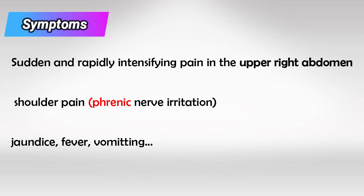If a gallstone obstructs the flow of bile from the gallbladder, it will result in right upper quadrant abdominal pain, which is progressive and colicky in nature. Sometimes you also see right-sided shoulder pain due to irritation of the phrenic nerve. You might also see jaundice, fever, or nausea and vomiting.